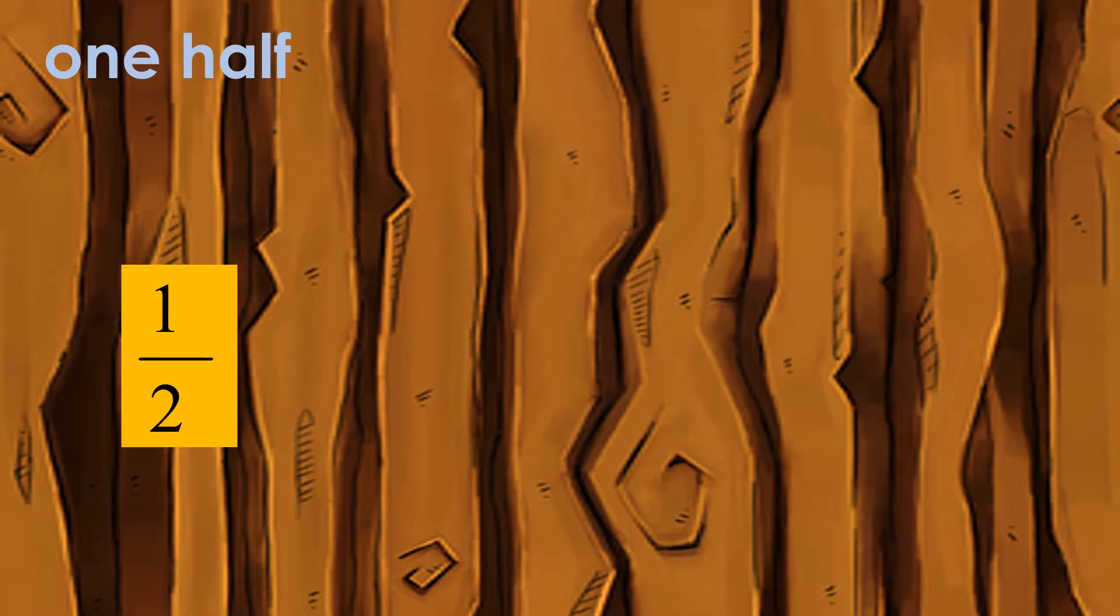The top number, or numerator, refers to a certain number of those parts. It lets us know how much we are talking about. Since we are talking about one slice of pizza, our numerator is one.